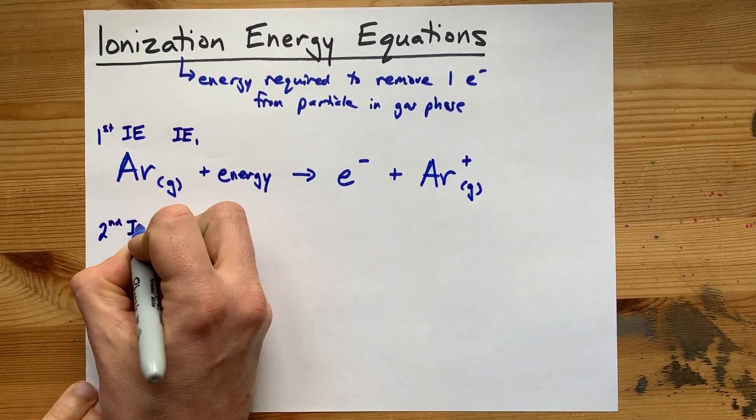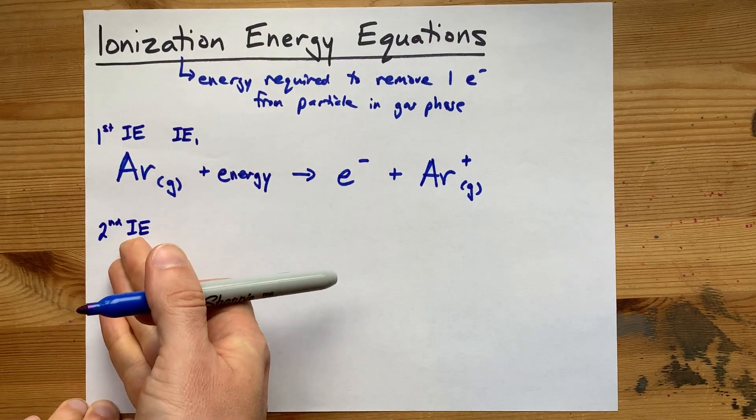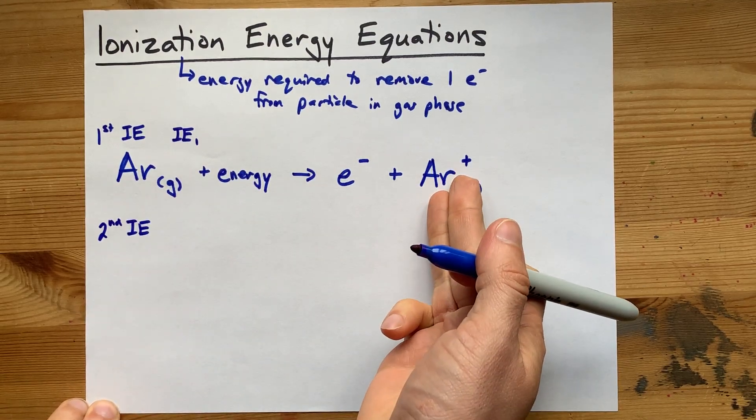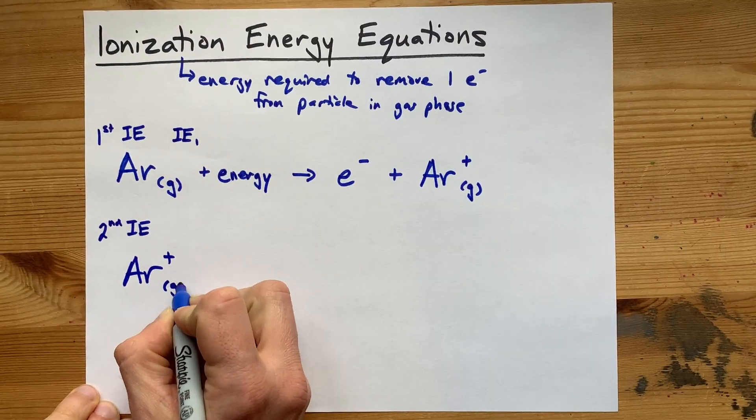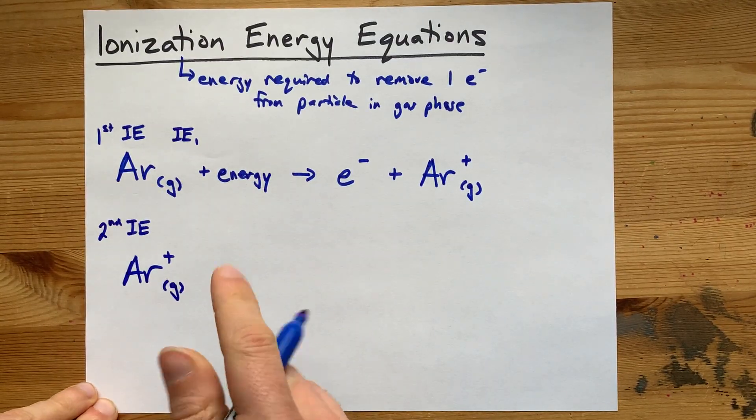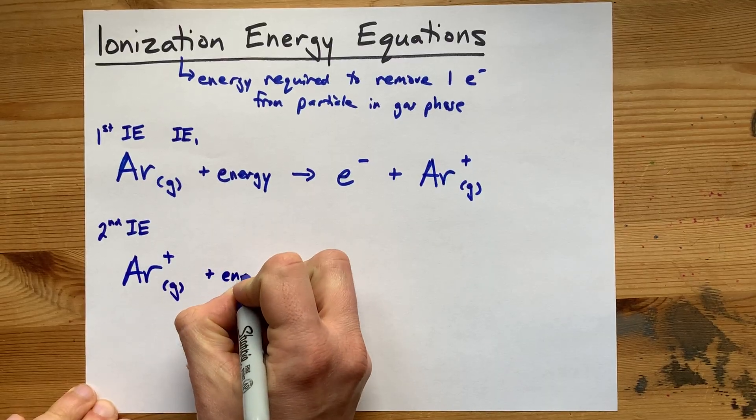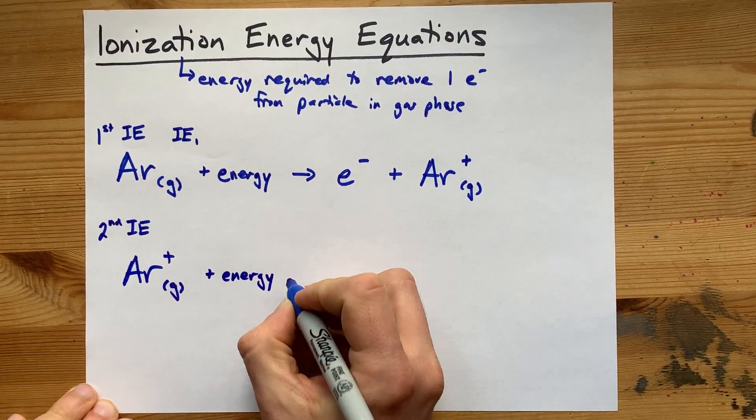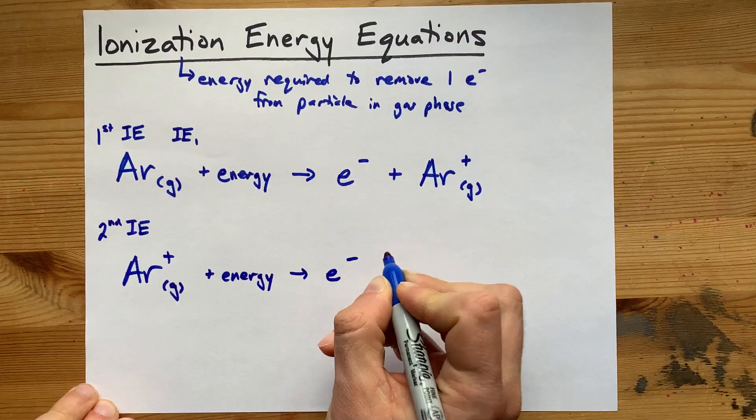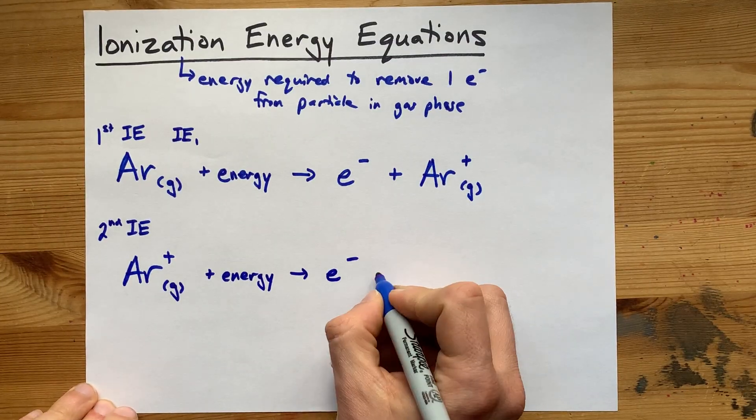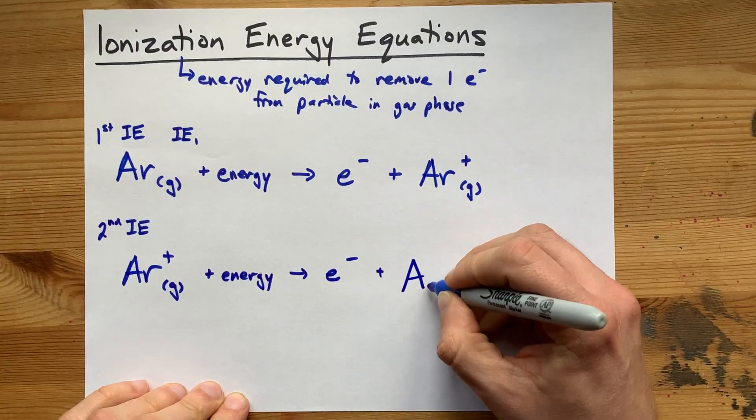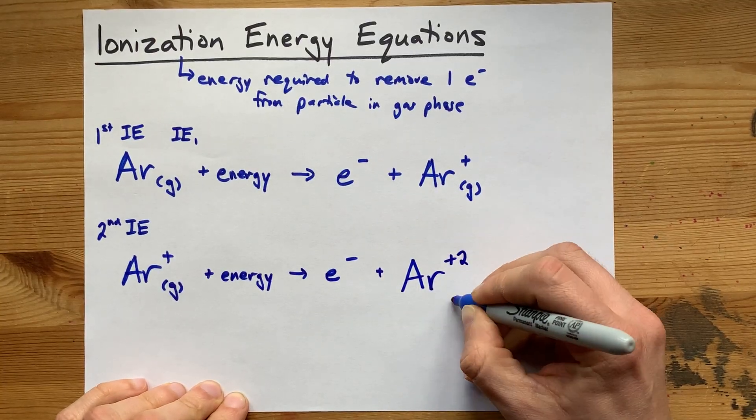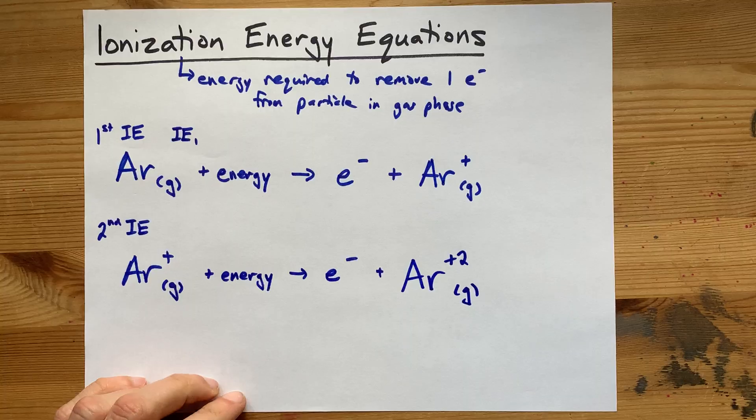The reason I'm mentioning that is there is a second ionization energy where you start with the Ar⁺ that resulted from the first ionization energy. And you use up a little more energy to pluck another electron out. What happens when you lose a second electron? Your charge goes up again, giving you Ar⁺².